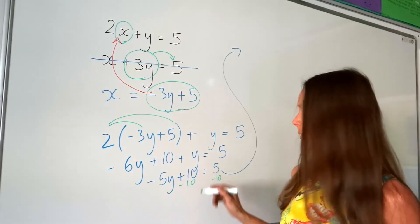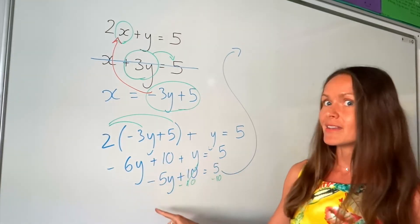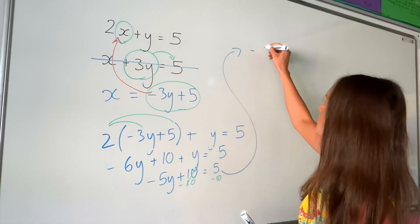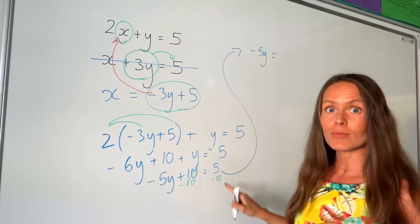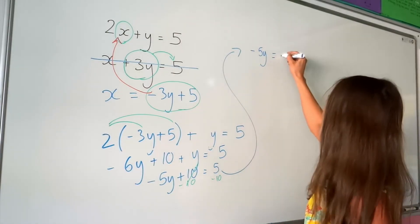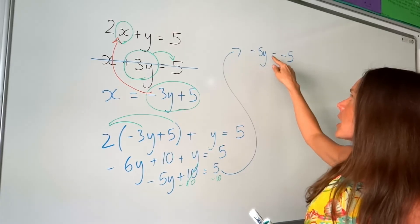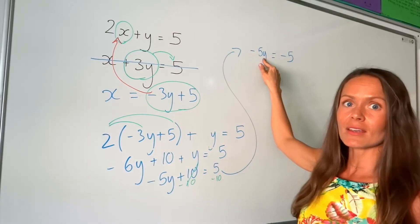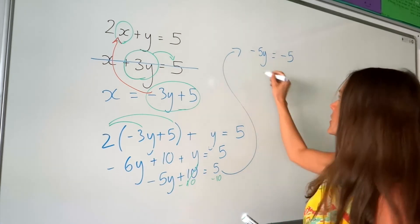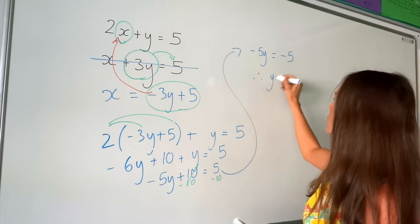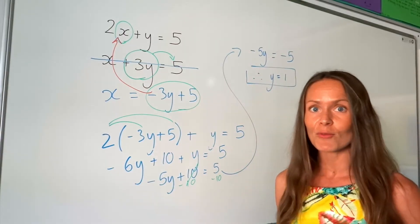On the left-hand side, 10 take away 10 is just 0, so I'm left with negative 5y on the left. Then I've got the equal sign, and 5 minus 10 is just negative 5. So negative 5 multiplied by something gives me negative 5 — well, that something must be 1, because negative 5 multiplied by 1 is still negative 5. So I found the value of y.